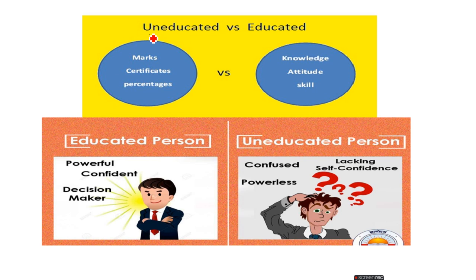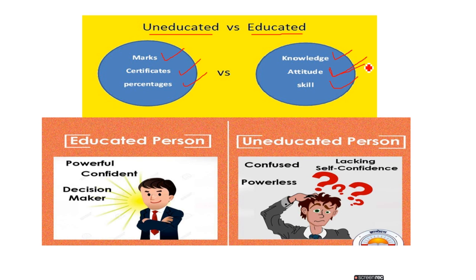Next is the difference between an educated person and an uneducated person. An uneducated person focuses only on marks, certificates, and percentages — like celebrating 96% or a certificate in civil engineering or medicine. But the educated person focuses on knowledge, attitude, and skills. Once they understand knowledge, they change their attitude. For example: the thing you are looking at will never change — but the way you see it makes a difference. That is all about your attitude.